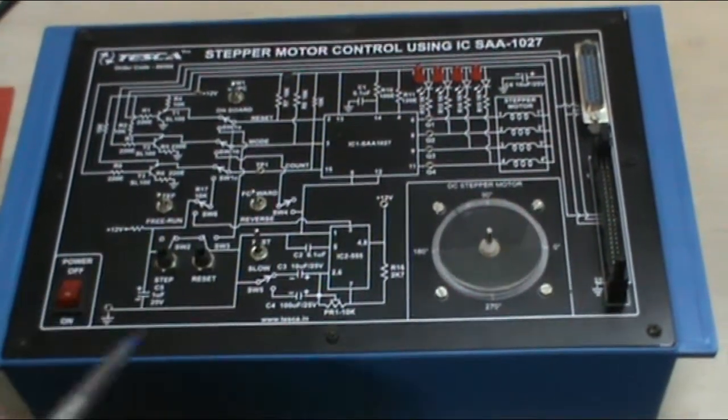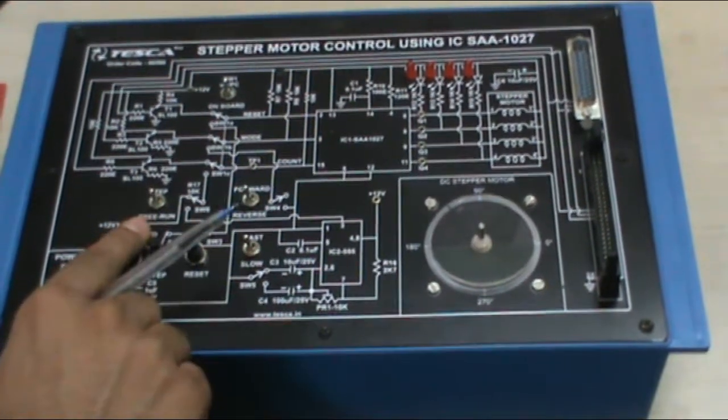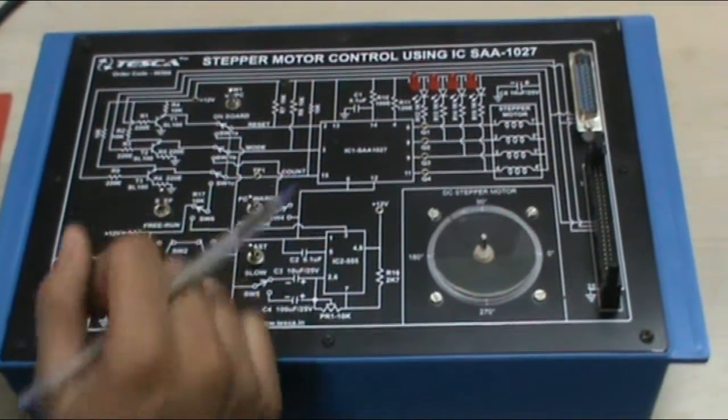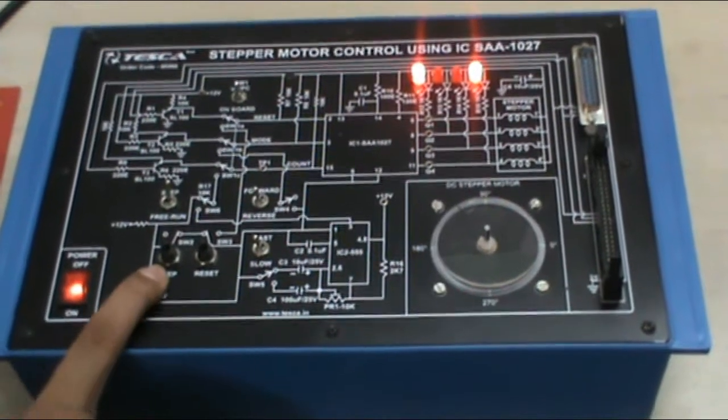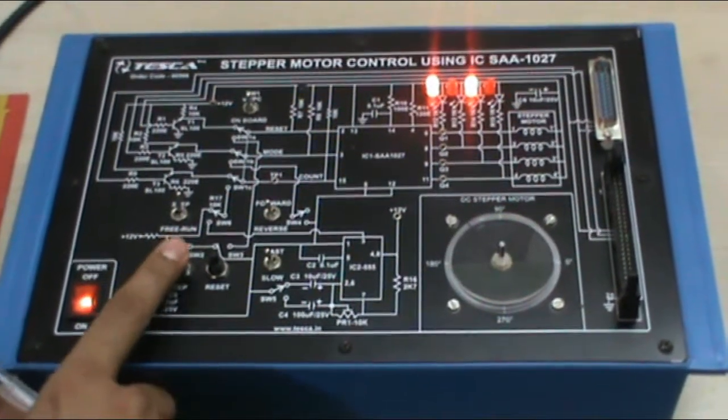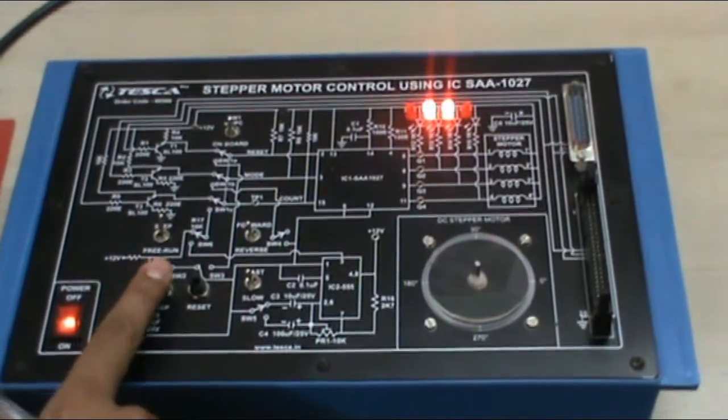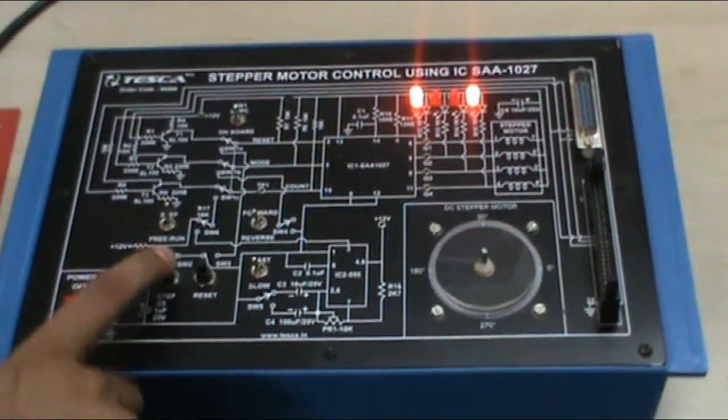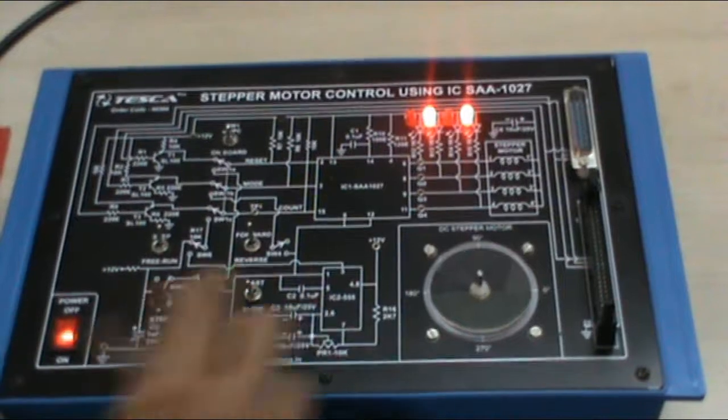Switch off the mains. Now keep this SW6 to step position. As we switch on, this is our step button. Now if we press it, the motor will move step by step. We can move as many steps as we want by pressing this button again and again. If we put it in forward direction, it will go in forward direction.